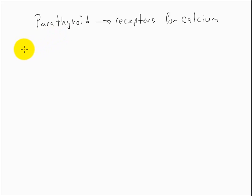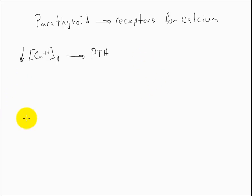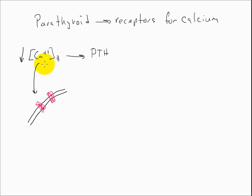When we get a low level of calcium in the blood, we need to release parathyroid hormone. Looking at the cell membrane of the parathyroid gland: we have our receptors sensing calcium. When there isn't a lot of calcium in the blood, it cannot bind to the receptors. So PTH sitting inside the cell is probably constantly fusing with the membrane and releasing PTH hormone into the blood.